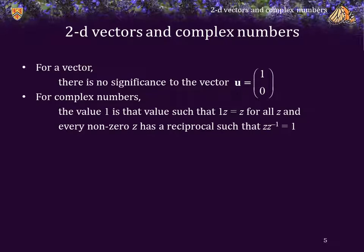For complex numbers, however, the analogous value, which is just 1 plus 0j, that is the value such that 1 times z equals z for all z, and every non-zero complex number z has a reciprocal such that z times z inverse equals 1.